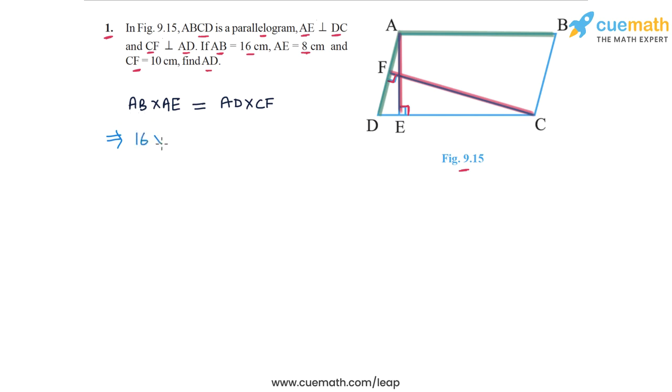AB is 16 cm, AE is 8 cm, AD is what we have to find, and CF is 10 cm. So we get AD is 16 into 8 by 10, or 128 by 10. 16 into 8 is 128. And therefore, we get AD as 12.8 cm. So this is the answer.